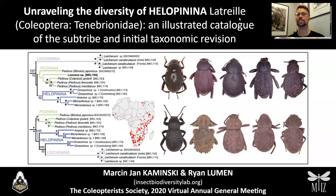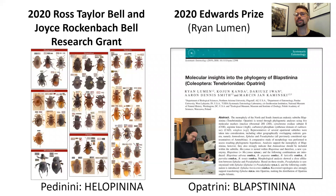Welcome to each and every one of you. It is a great honor for me to open this presentation panel with a talk about darkening beetles. This presentation has two authors: myself, Marcin, and Ryan. We are both researchers representing Aaron Smith's Insect Biodiversity Lab at Purdue University. This year we received the Bell Research Award, and additionally Ryan has won the Edward Prize for the paper entitled 'Molecular Insights into the Phylogeny of Labstinina.'